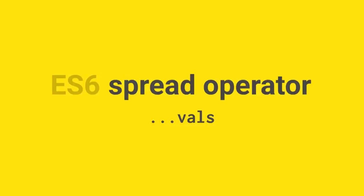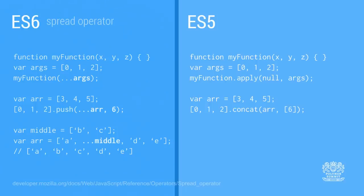The first is the spread operator. Given an array, prefix it with three dots and that explodes it out into multiple values. We have a lot of code in today's presentation — you're going to see ES6 examples on the left and ES5 equivalents on the right. So the spread operator is nice: if you have a function that takes three parameters x, y, z, with the spread operator you can pass in an array prefixed with those dots, and it will break each of those values into x, y, z. Before, you had to do things like call function.apply, which is kind of nasty. So we're eliminating some of those hacks from the language.